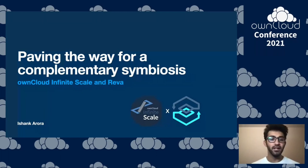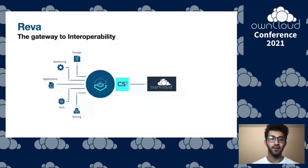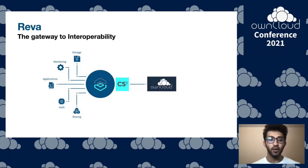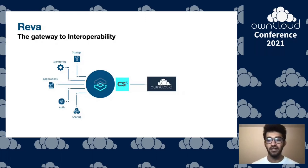By now I'm pretty sure you're all aware of what OSIS is. Let me give you a background on Reva as well. First, let's look into why we needed it in the first place. Traditionally, a lot of enterprise file sync and share systems used to have ad hoc bindings for various applications and storage backends.